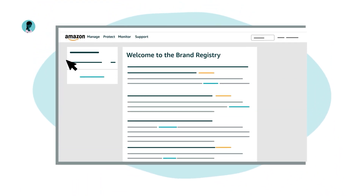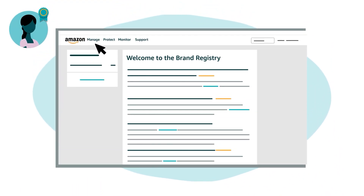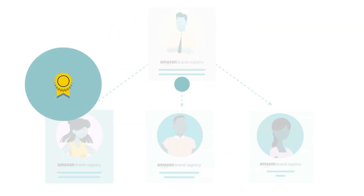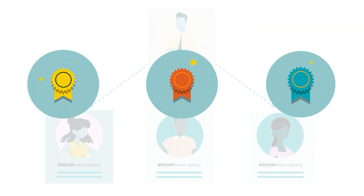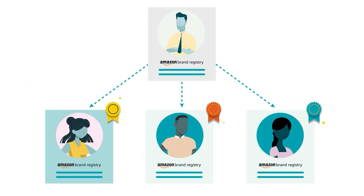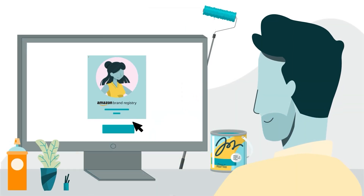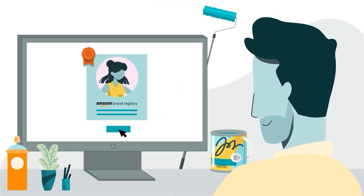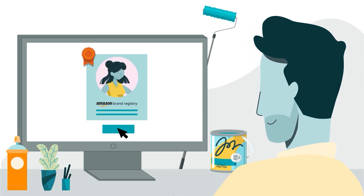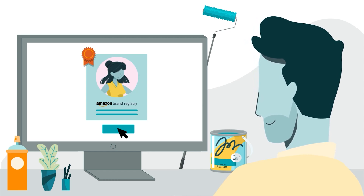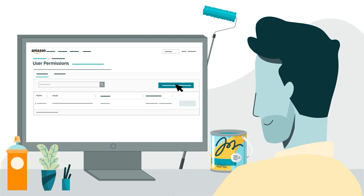Registered Agents can also use other Brand Registry tools with access similar to that of a Rights Owner. Now that we're familiar with each role, let's review the process for assigning them. To affiliate an additional Brand Registry account with a brand and assign roles, an administrator for the brand follows a few simple steps.